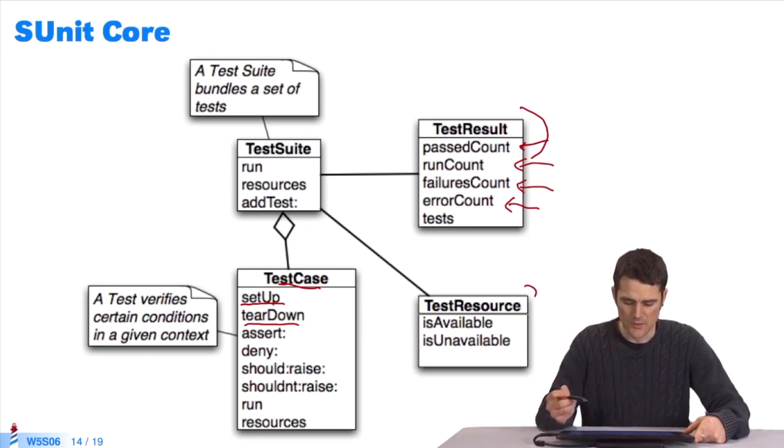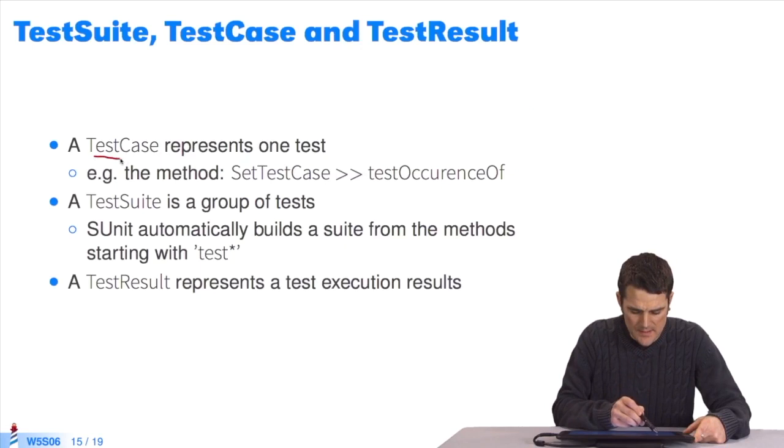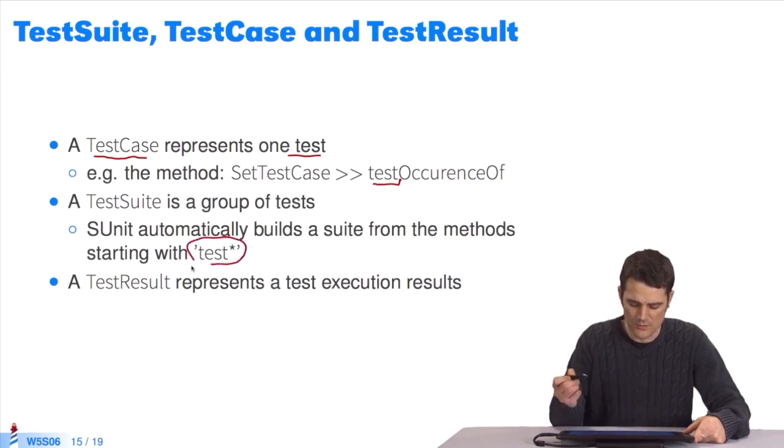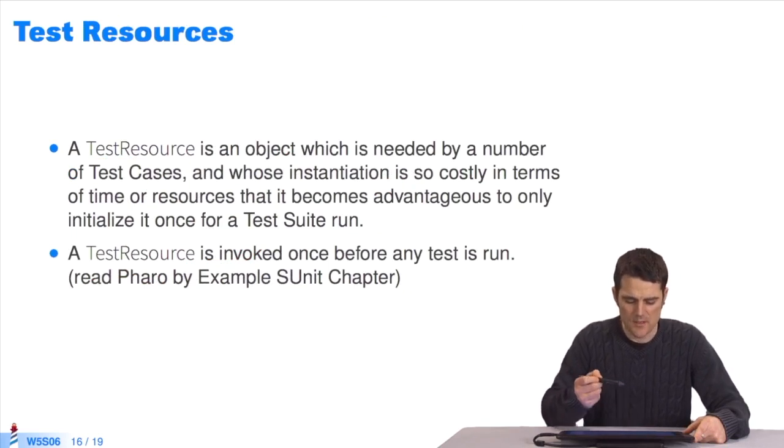We also have the notion of TestResource, which allows us to define the test resources for a whole suite. A TestCase, as I said, represents one test. It's one method starting with test, defined in a subclass, TestCase. A TestSuite is a group of tests, it's all the test case methods defined in one or several classes. And a TestResult will be a result of several test executions. A TestResource is an object that will enable the initialization of a group of resources, which are costly to initialize in normal time, and which we only want to initialize once for a group of tests.